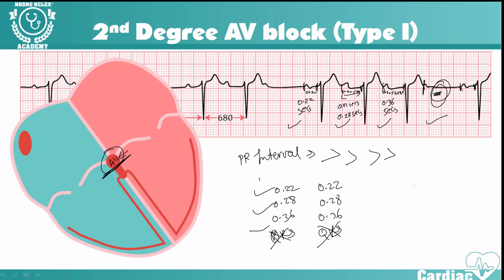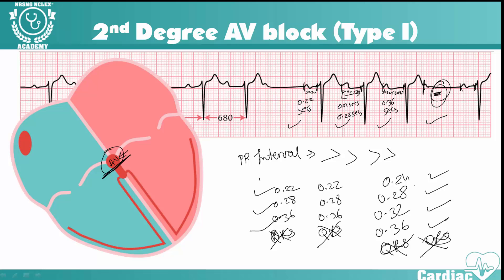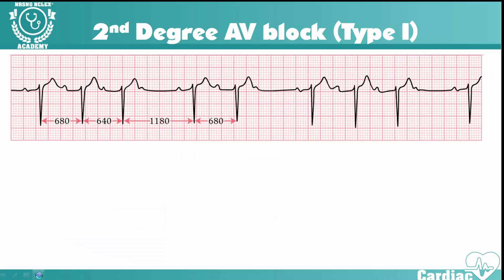These numbers may vary. For example, 0.24, 0.28, 0.32, 0.36 and the QRS drops — then 0.24, 0.28, 0.32, 0.36 and QRS drops again. In Wenckebach, the PR interval gradually increases until there is a dropped QRS. That's how you identify this type 1 block. Let's now look at the five criteria in detail.